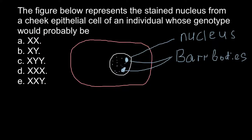Only one X chromosome is needed for normal development, so in females the second X chromosome would be turned off, or would form a very dense formation. If you ask which chromosome would be turned off — whether it is maternal or paternal — here is the explanation.